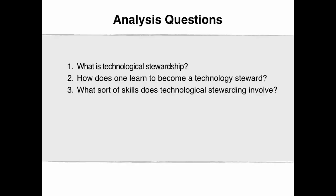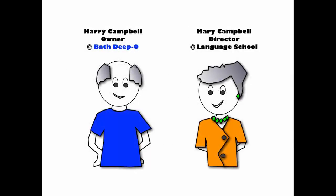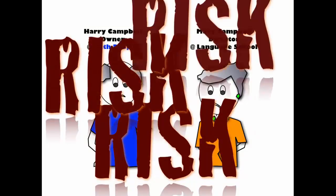If you recall, Mary, the director of the language school, and Harry, the owner of Bat Depot, both needed to learn how to exploit technologies to improve their businesses. Everyone they consulted with ended up telling them they needed to develop skills with social media, which involved learning how to work with the social aspects of learning. This ideology is far from what Mary and Harry learned in school, and they feel very insecure. They don't know how to proceed, and they feel as though they are taking too many risks.